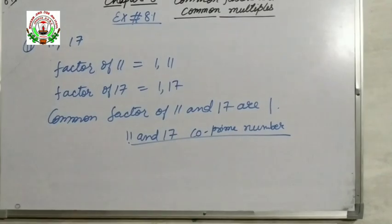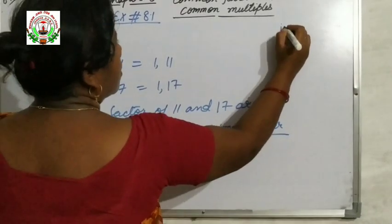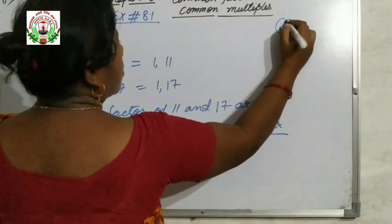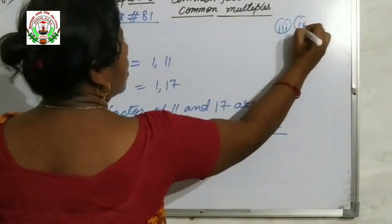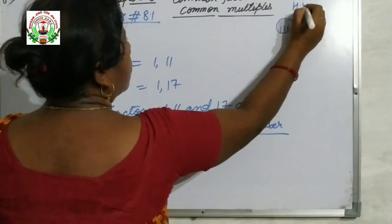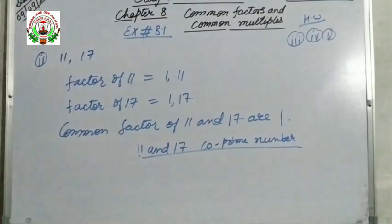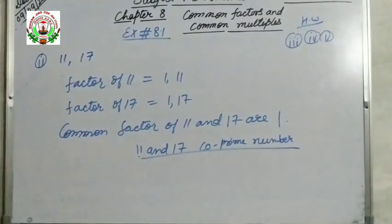Now you will try question number 3, which is 4 and 5 — that is your homework. Next class we will start section 8.2. Thank you.